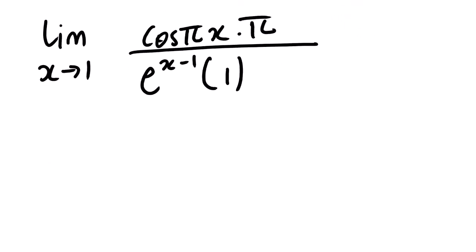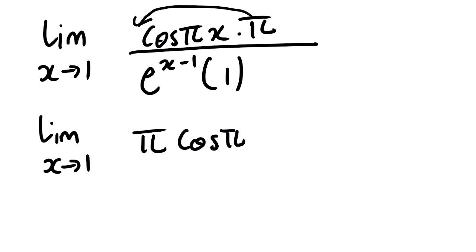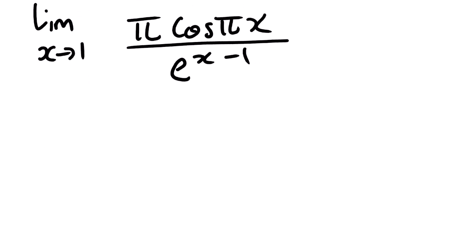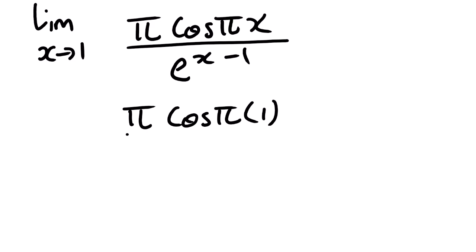Now we can go ahead and try to substitute. Before substitution, we need to simplify — we take the constant π and place it out front. Then we substitute: we have π cos(π·1) all over e to the power (1 minus 1).